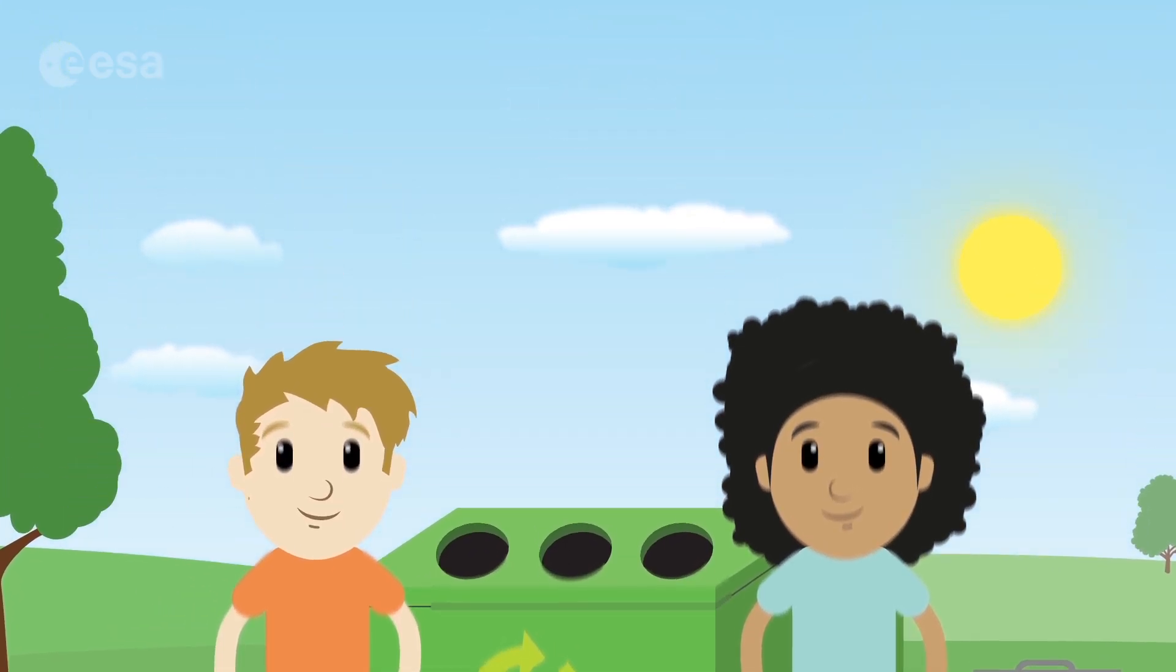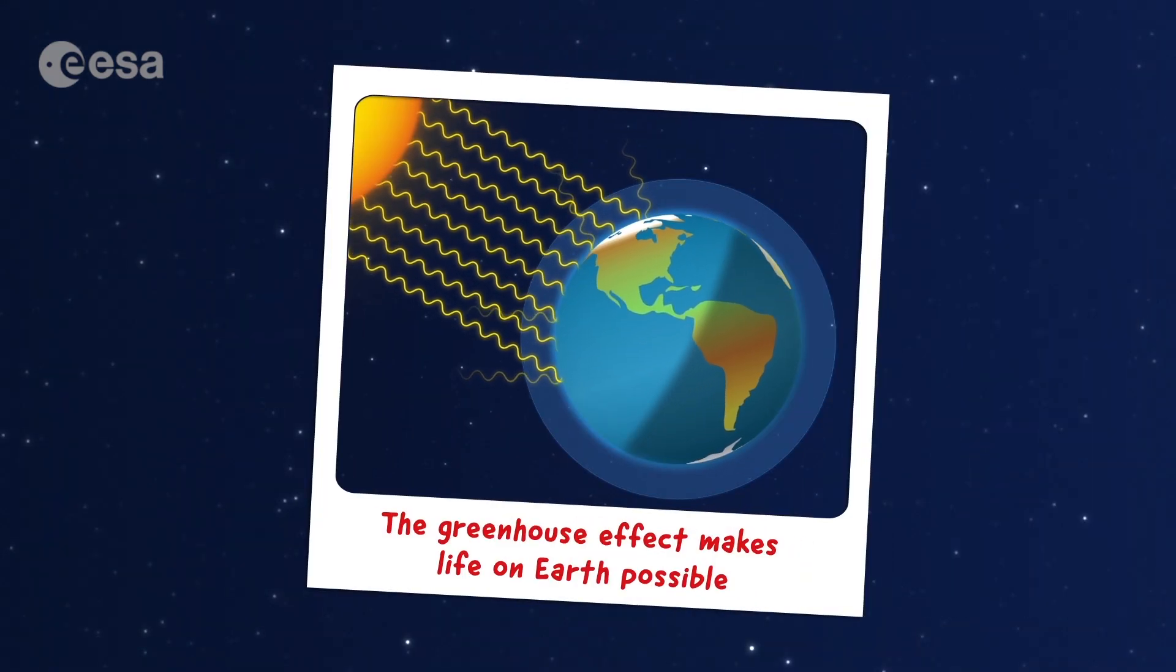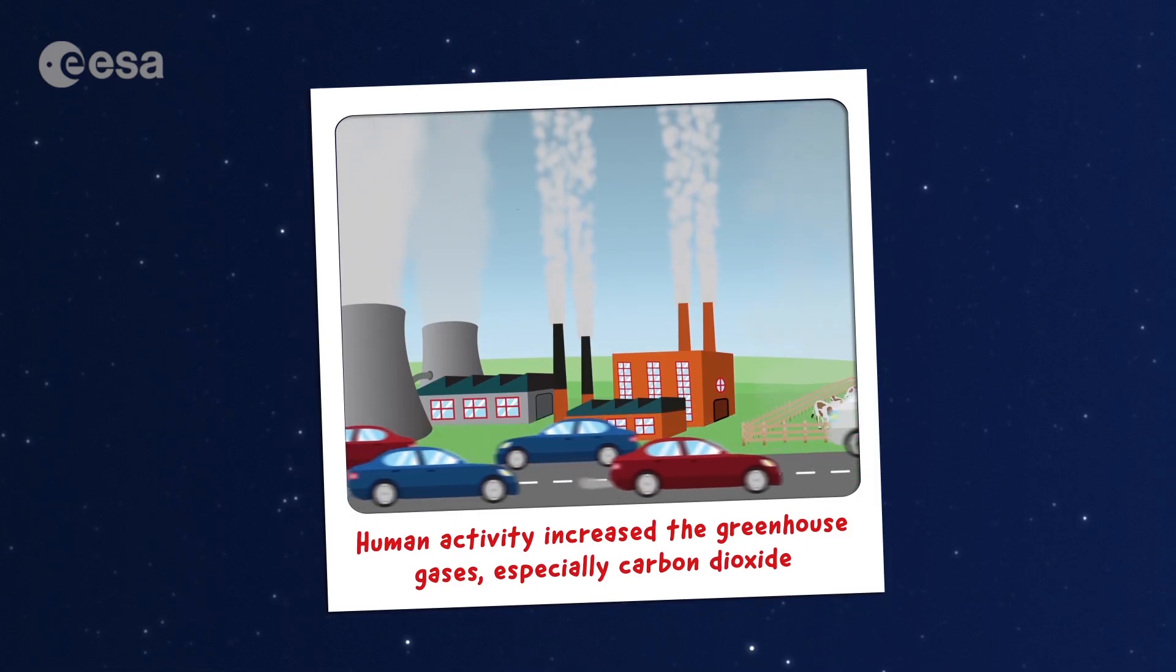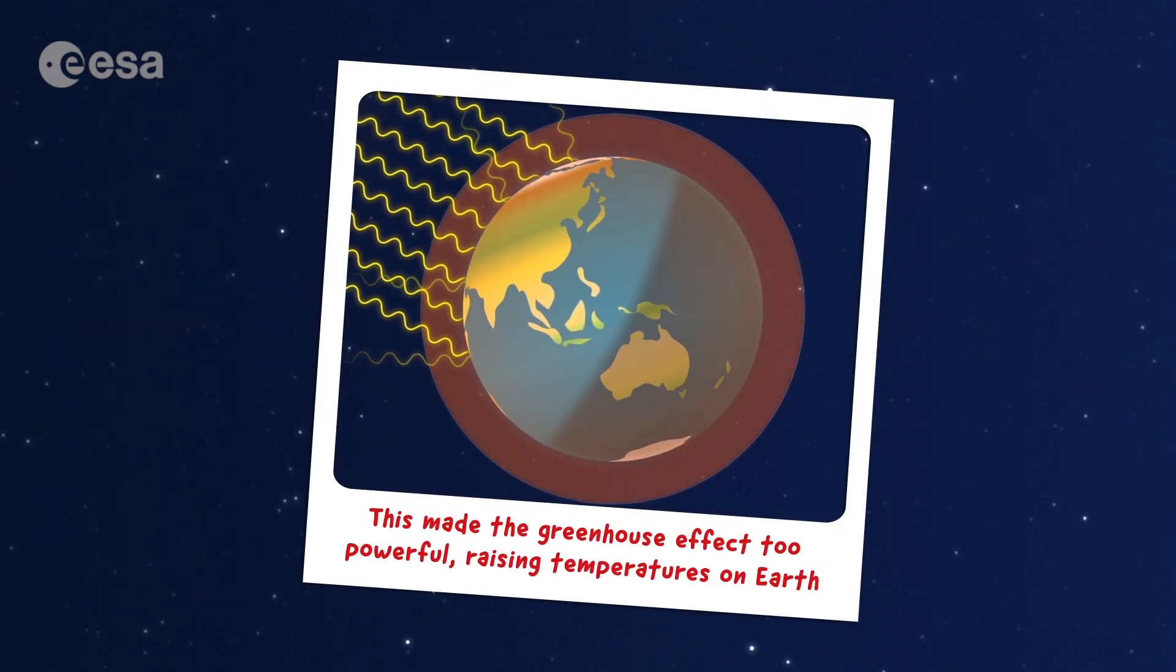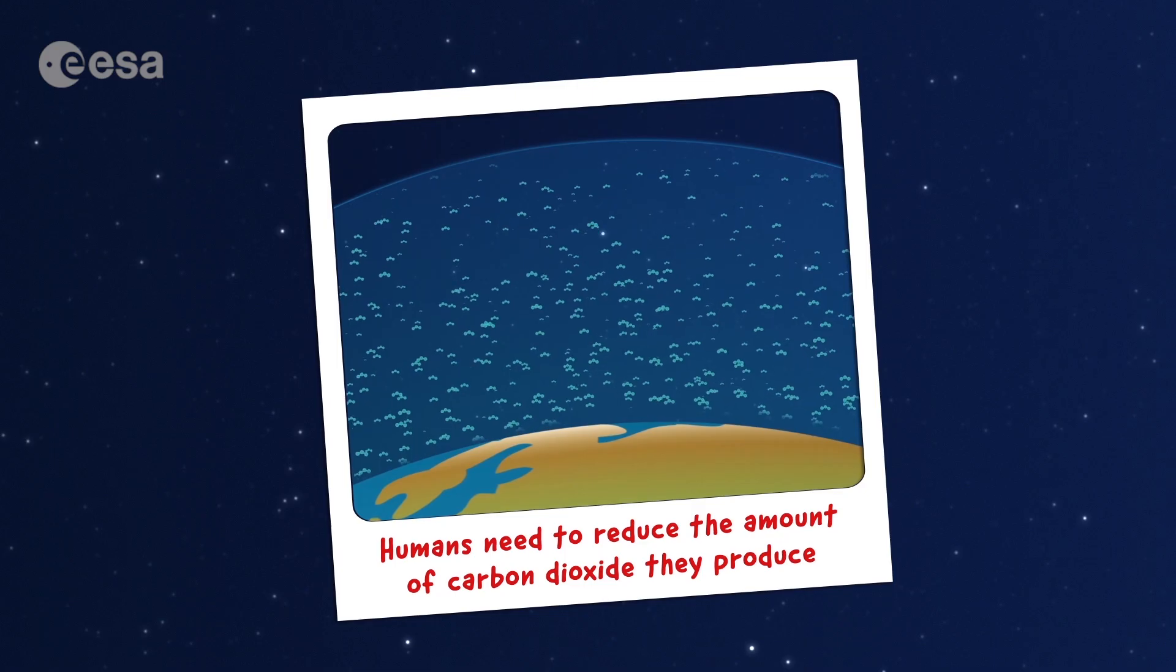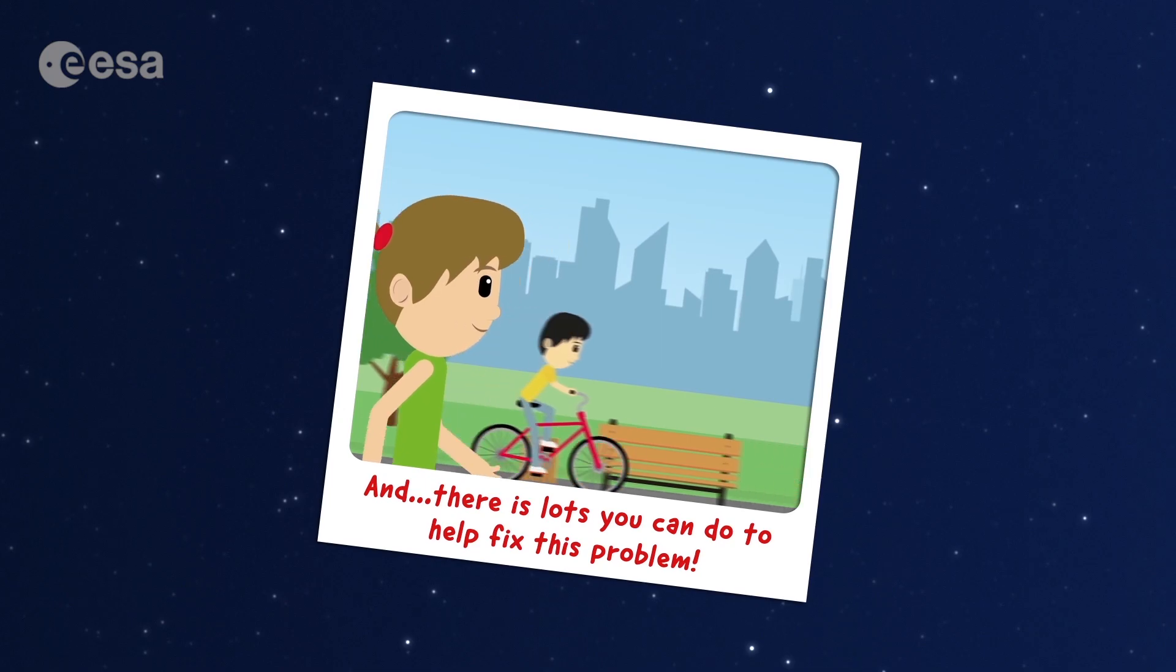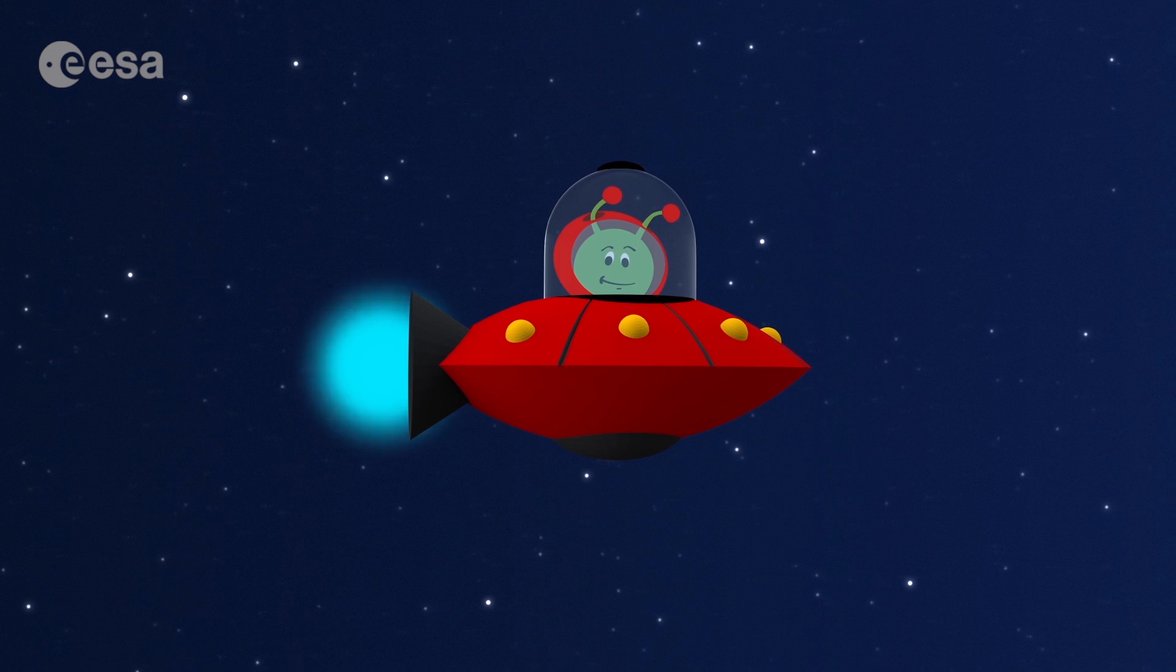So, today we learned that the greenhouse effect makes life on Earth possible. Human activity increased the greenhouse gases, especially carbon dioxide. This made the greenhouse effect too powerful, raising temperatures on Earth. Humans need to reduce the amount of carbon dioxide they produce. And there is lots you can do to help fix this problem. See you next time for our next adventure.